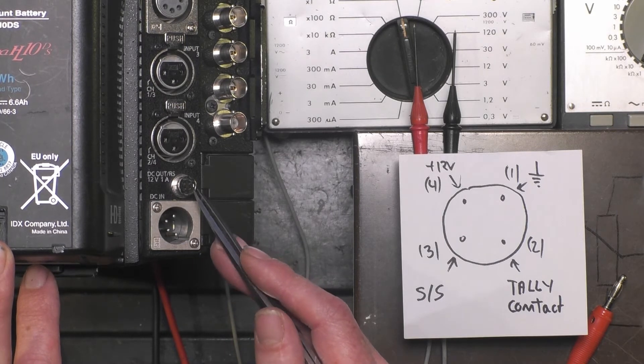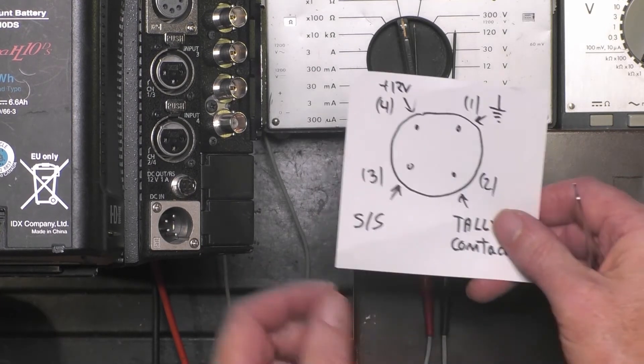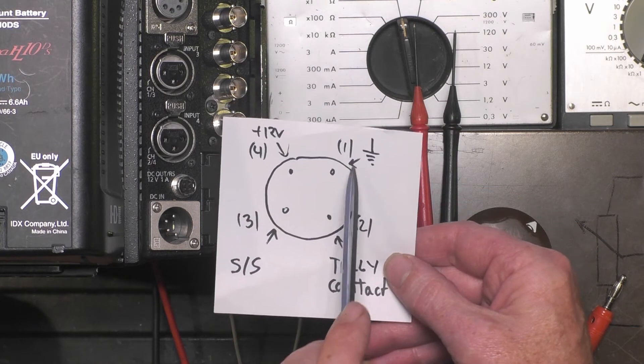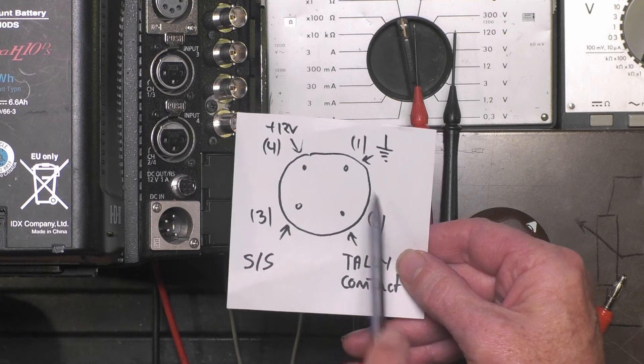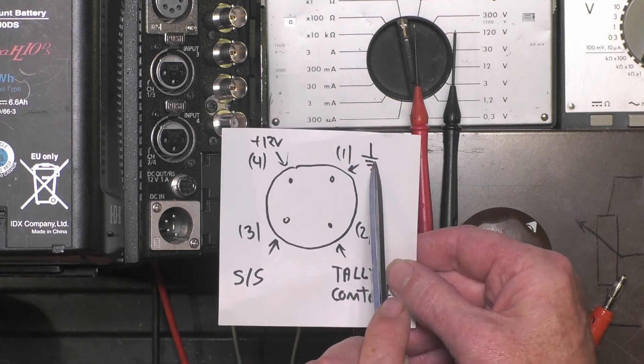So this is the 4-pin Hi-Rose connector with four pins. This is the pin configuration. Pin 1, which is there, so this table matches with the position here. Pin 1 is connected to the ground.